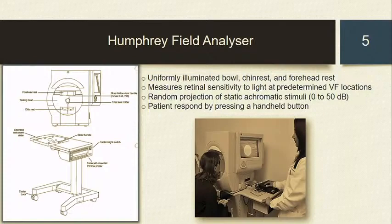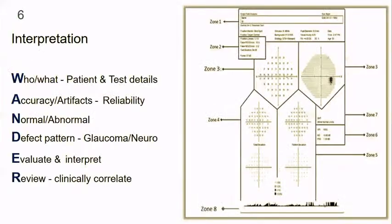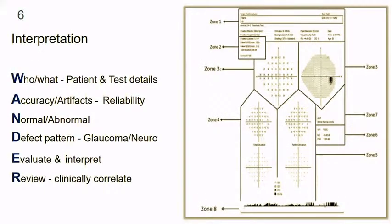In HFA, while the patient focuses on a central fixation target, the analyser randomly projects a series of circular white lights of varying brightness throughout a uniformly illuminated bowl. Whenever the patient appreciates a light in the near periphery, they indicate it by pressing a handheld button. This measures retinal sensitivity by estimating its ability to detect the stimulus at specific points within the tested visual field. Rather than presenting contents in a linear format, we will first look at a report generated by HFA and then discuss what we come across in a printout.